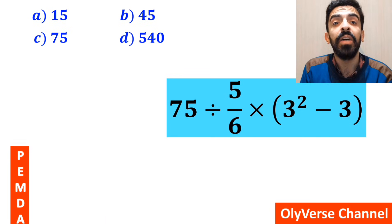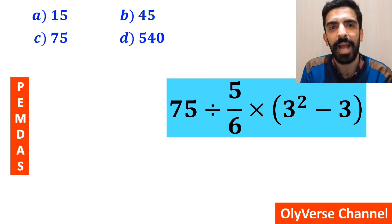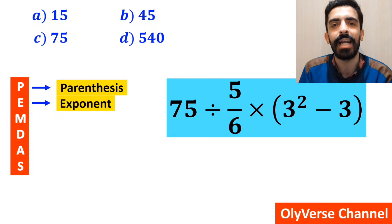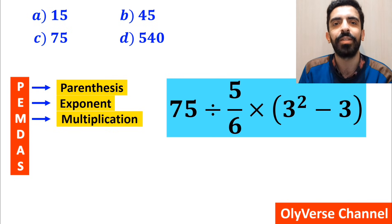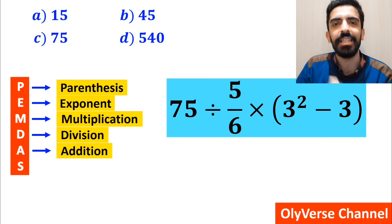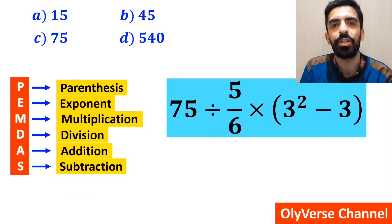To solve this question, we need to follow a rule called PEMDAS. In this rule, P stands for parentheses, E stands for exponent, M stands for multiplication, D stands for division, A stands for addition, and S stands for subtraction.